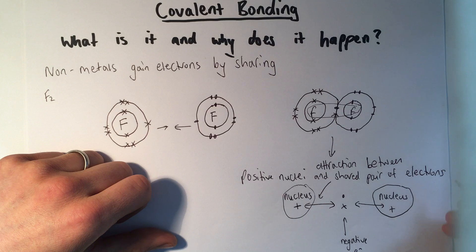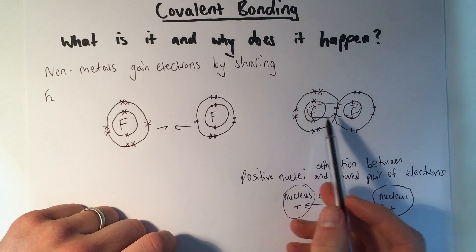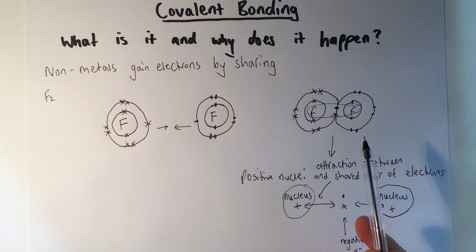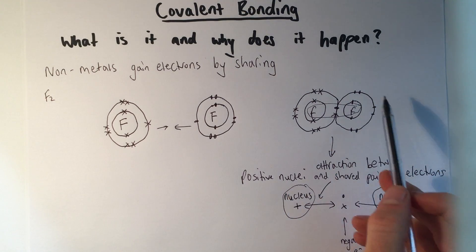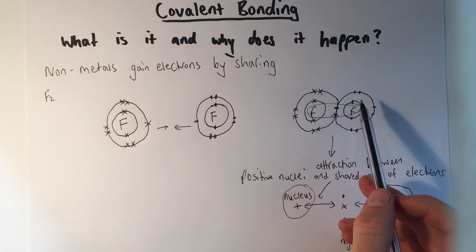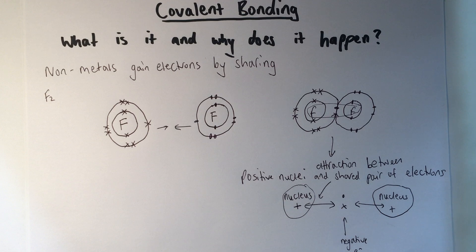It's a very strong force, the attraction there, which means these covalent bonds are very strong. I'll make other videos that show more examples of how to draw these dot and cross diagrams and what structure this leads to covalent compounds and elements having.